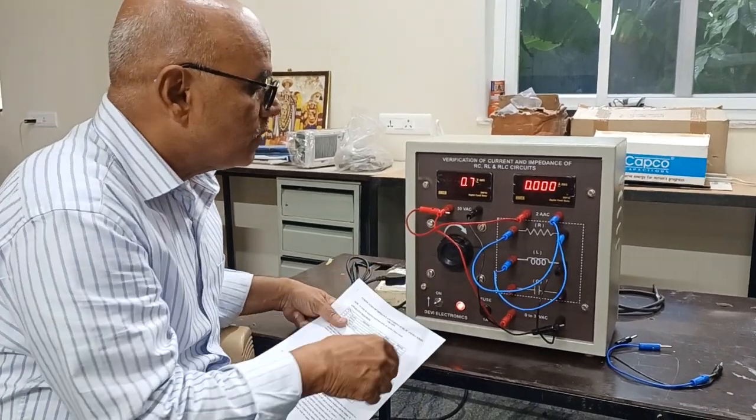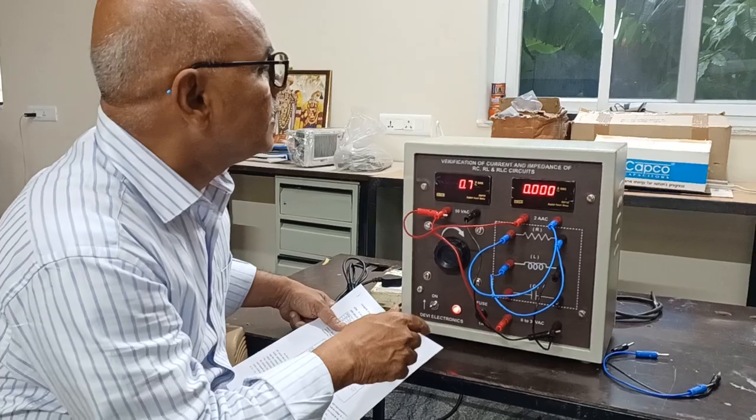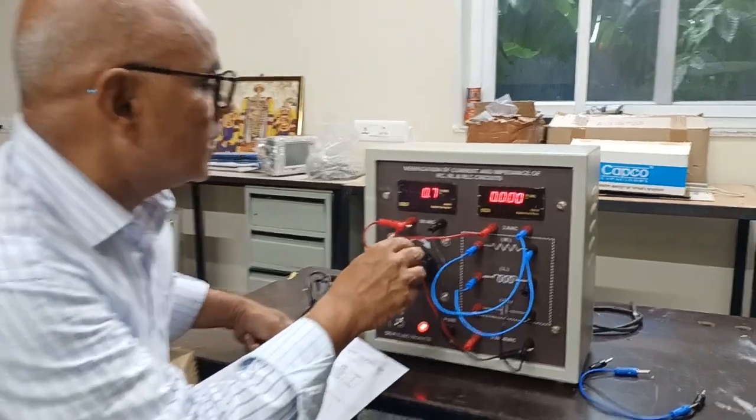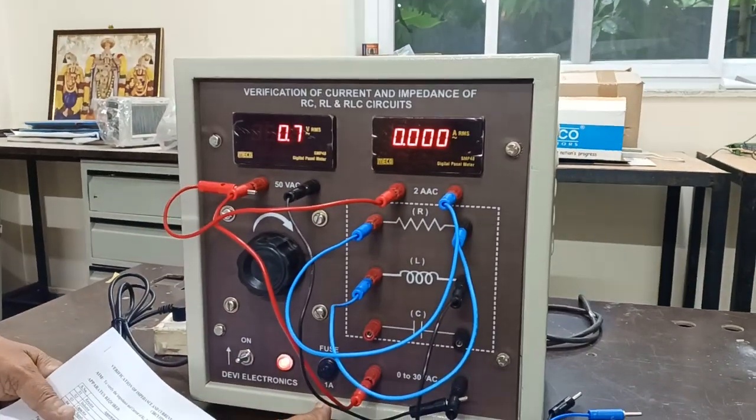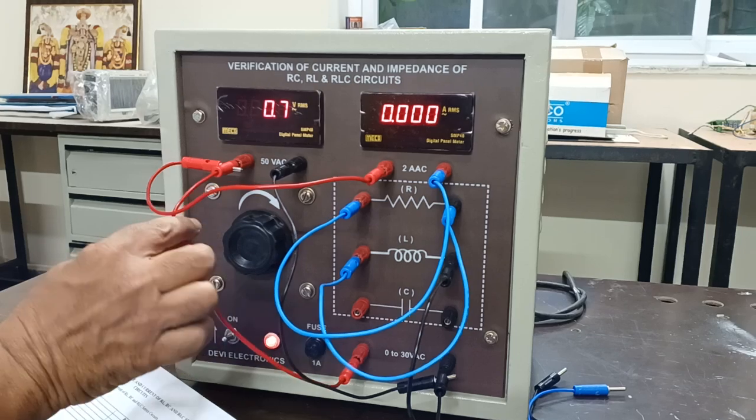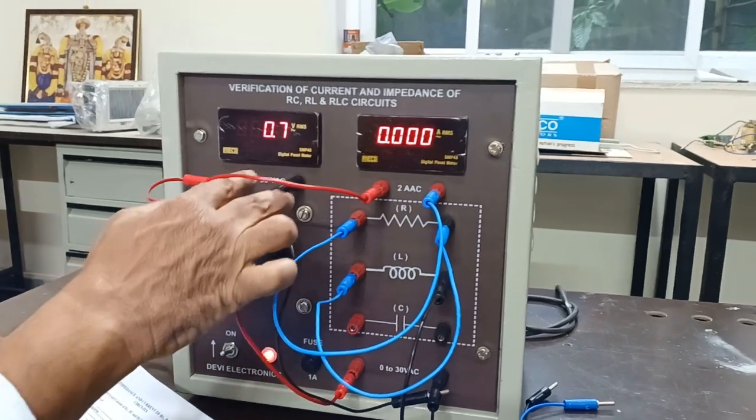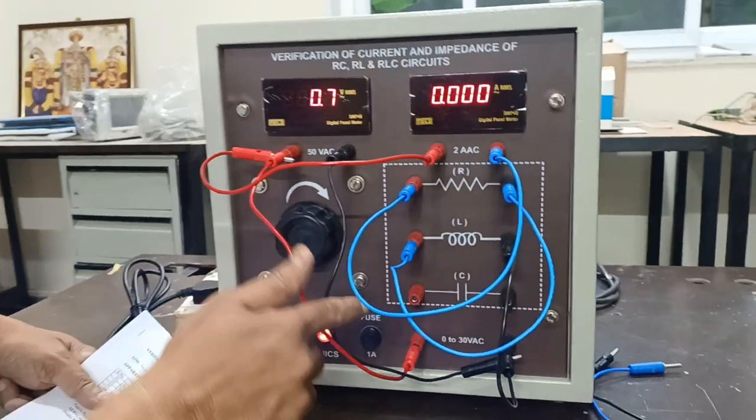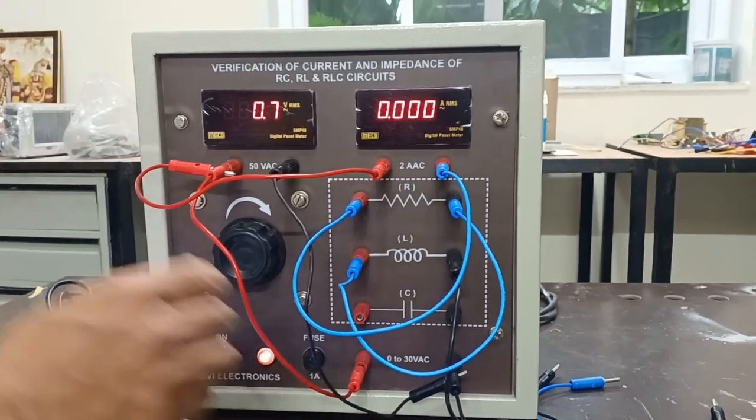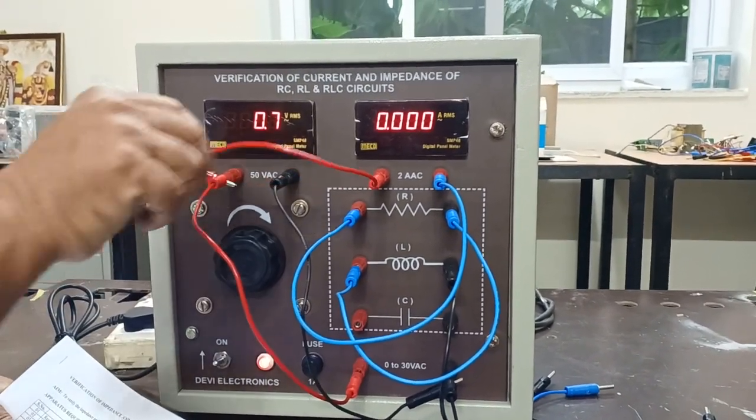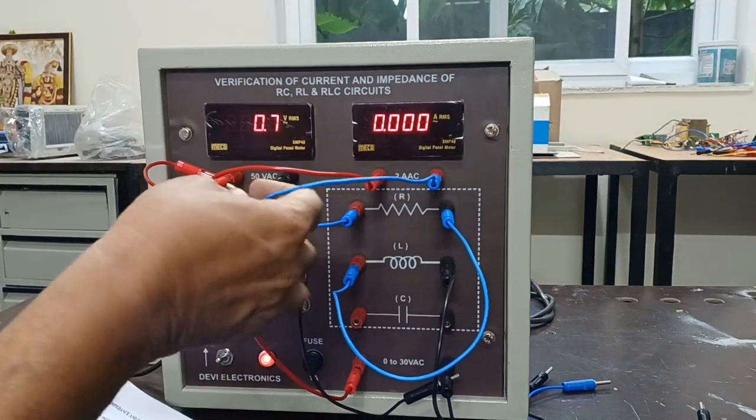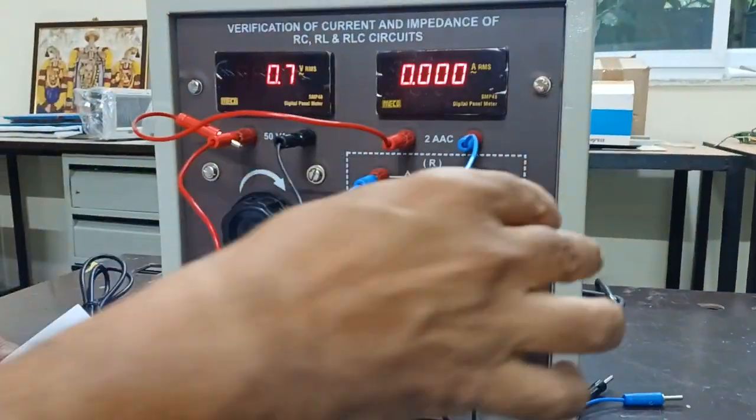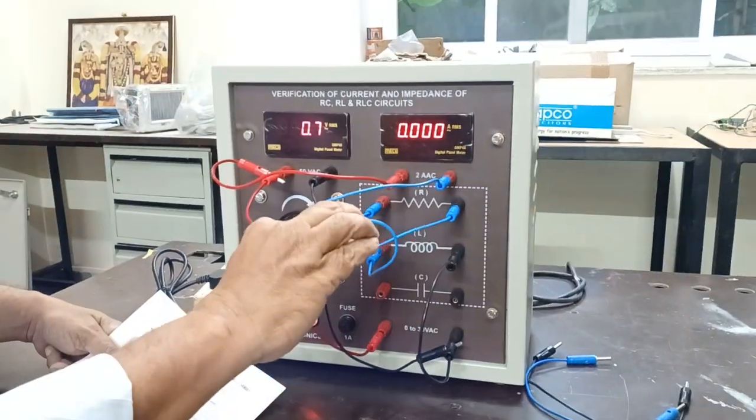And then slowly now we will perform RL. We will try to find out RL impedance. Say this is my source from R to voltmeter. I have connected one voltmeter across my input source. Say R to R, black to black, neutral to neutral. And then this junction point to ammeter, ammeter another end to R1 end. R another end to starting point of my L.